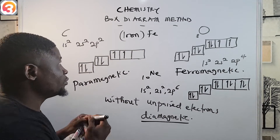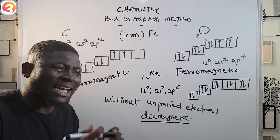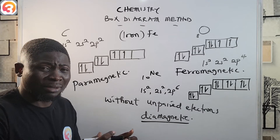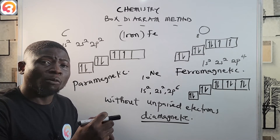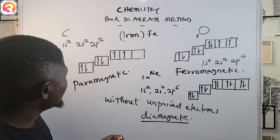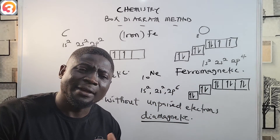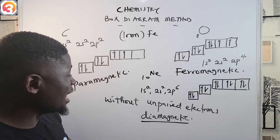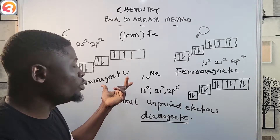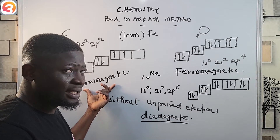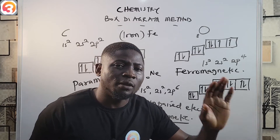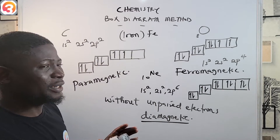Species with unpaired electrons can also be called ferromagnetic if that species is iron (Fe) or some other transition metal with magnetic properties — for example, gold, silver, tungsten, cobalt, nickel, or vanadium. So we have: diamagnetic for species without unpaired electrons, paramagnetic for those with unpaired electrons, and ferromagnetic for iron and other transition metals.